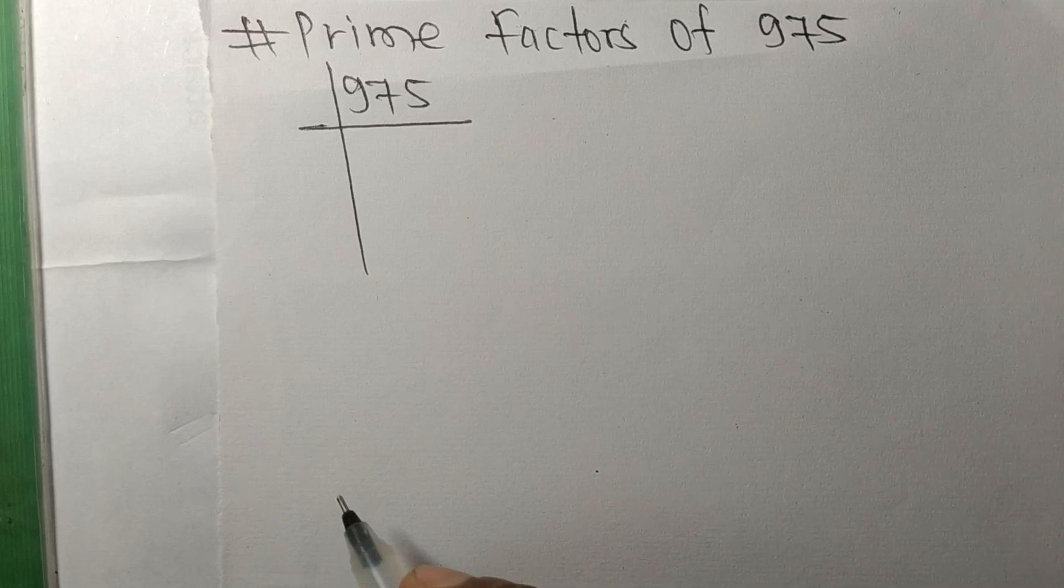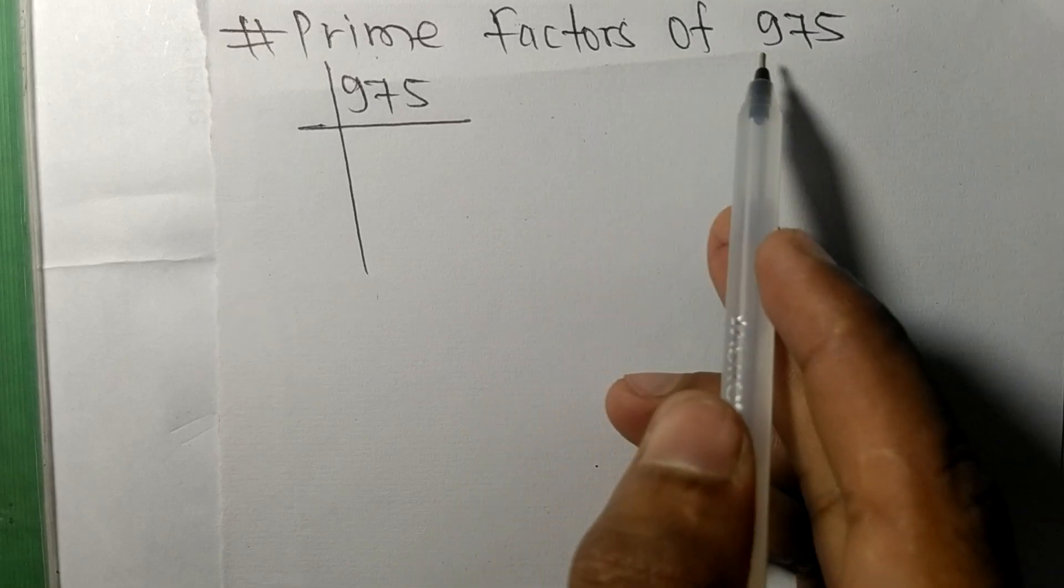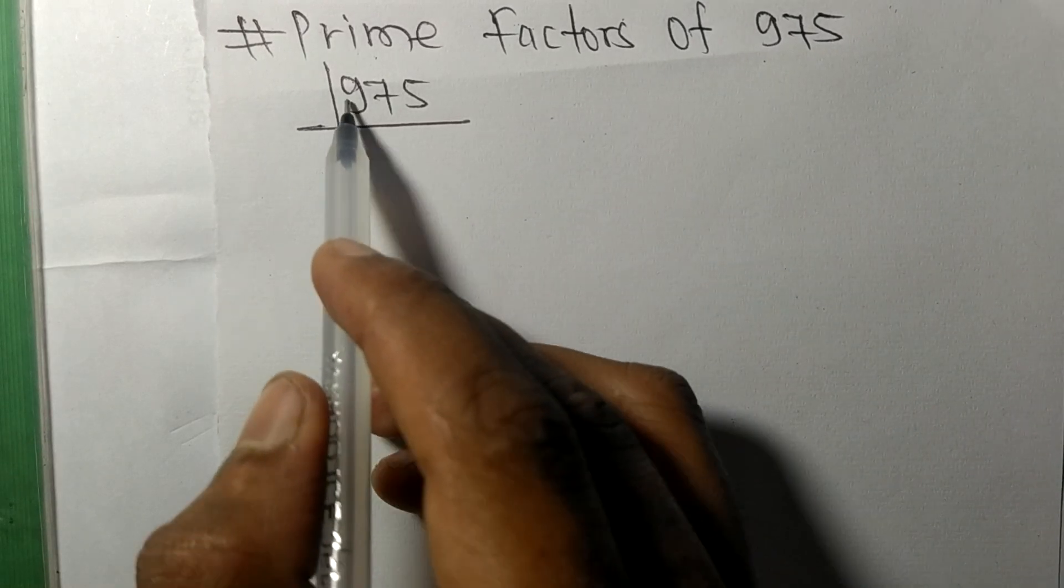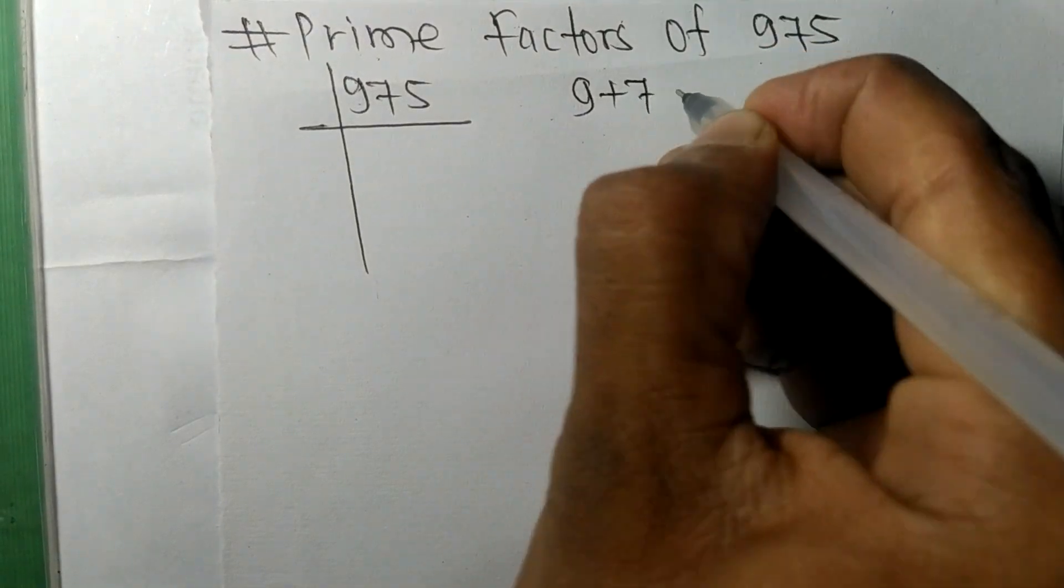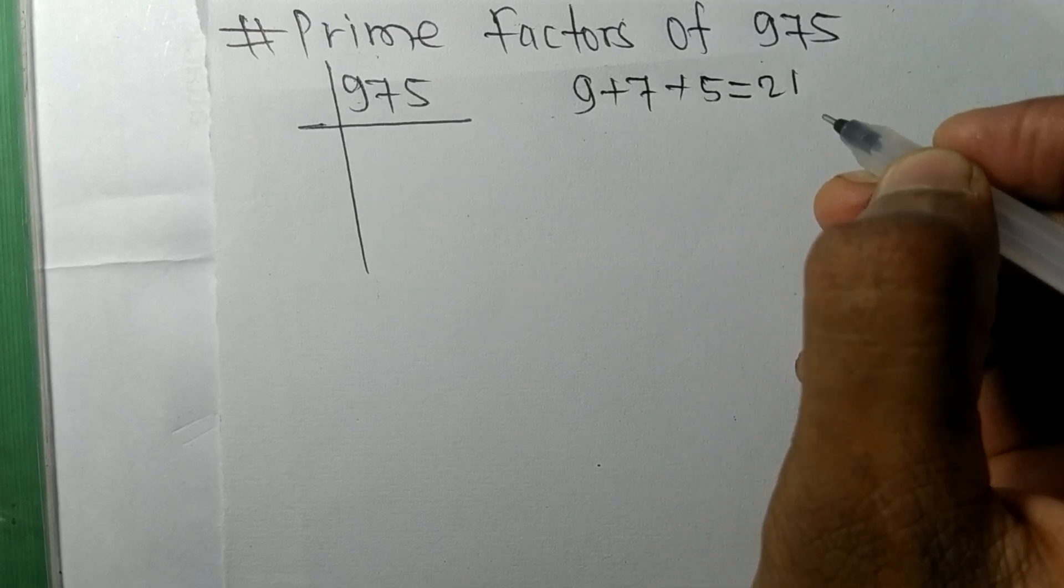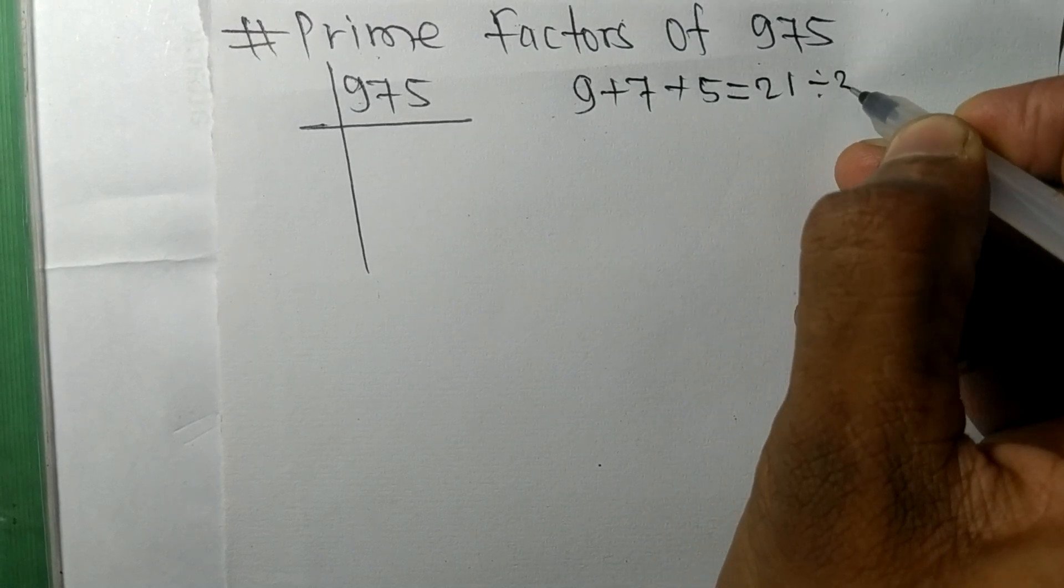Today in this video we shall learn to find the prime factors of 975. When we add all these numbers, 9 plus 7 plus 5, we get 21, and 21 is exactly divisible by 3.